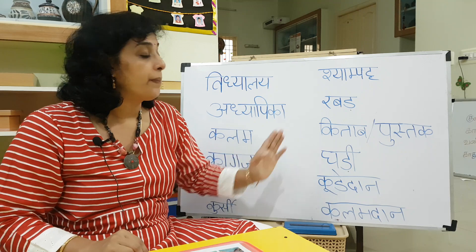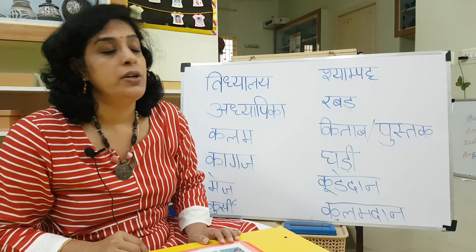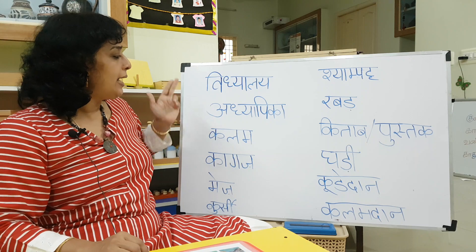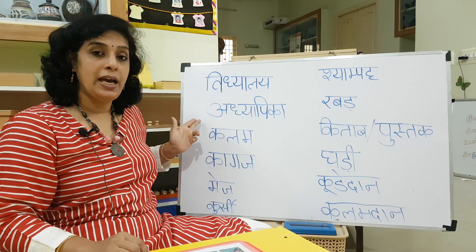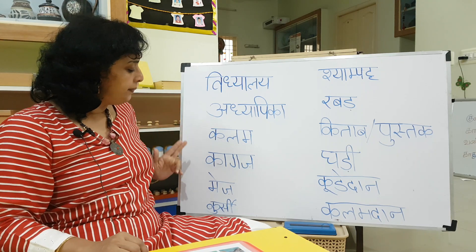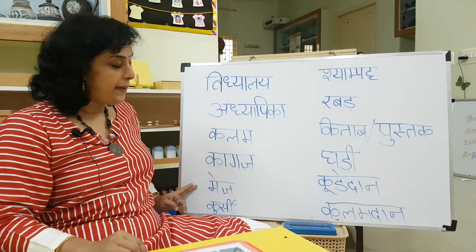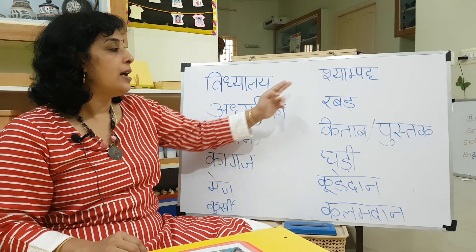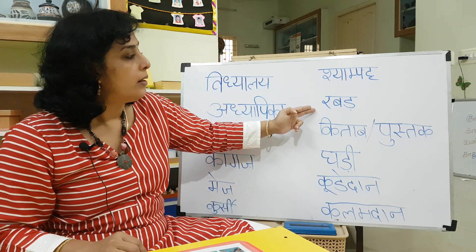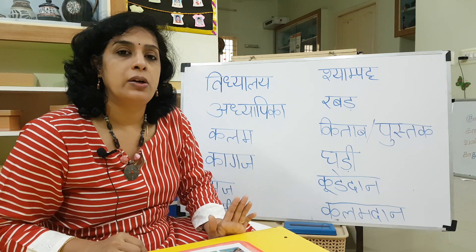So these are the things we learnt last time: Vidhyalai, Adhyapika, Kalam, Kaagaz, Maze, Kursi, Shampatta, and Rabad.